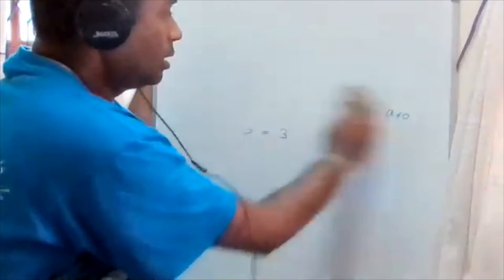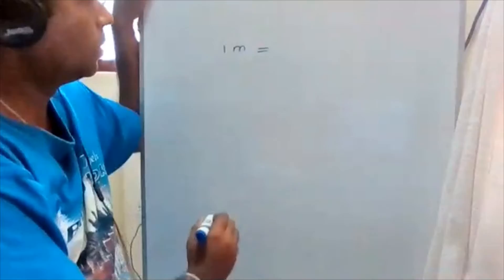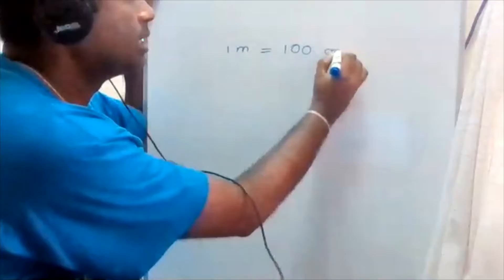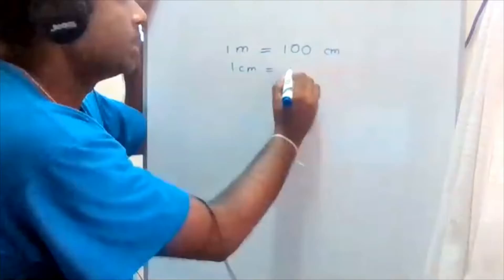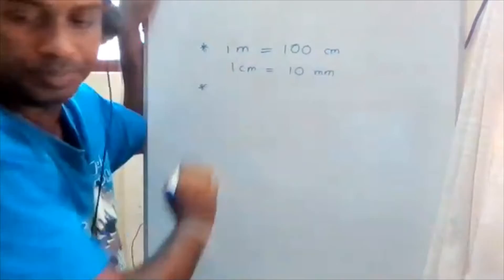Another important thing to keep in mind is unit conversions. One meter equals 100 centimeters, and one centimeter equals 10 millimeters. These are very important.